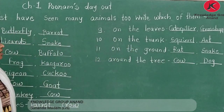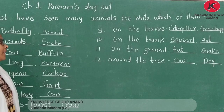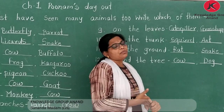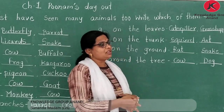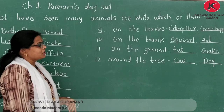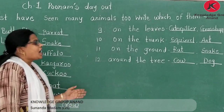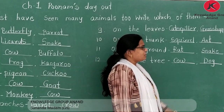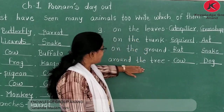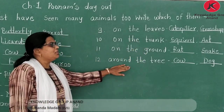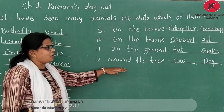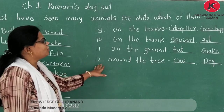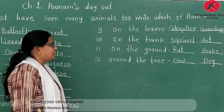Twelve number is 'around the tree.' Tree ki aas paas jo hamare animals dhikhte hain — like domestic animals. Domestic animals woh hamare aas paas rehte hain. Here cow and dog are mentioned. Bohut saare animals aate hain jo around the tree — like horse, buffalo, ox. Bohut saare animals hain jo yaha pe hum mention kar sakte hain.